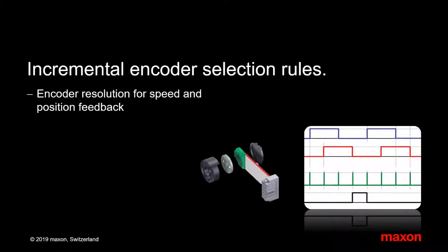This tutorial would like to give some recommendations for finding a suitable encoder for your application. It focuses on incremental encoders, the most widely used sensors for speed and position feedback on miniature motors.